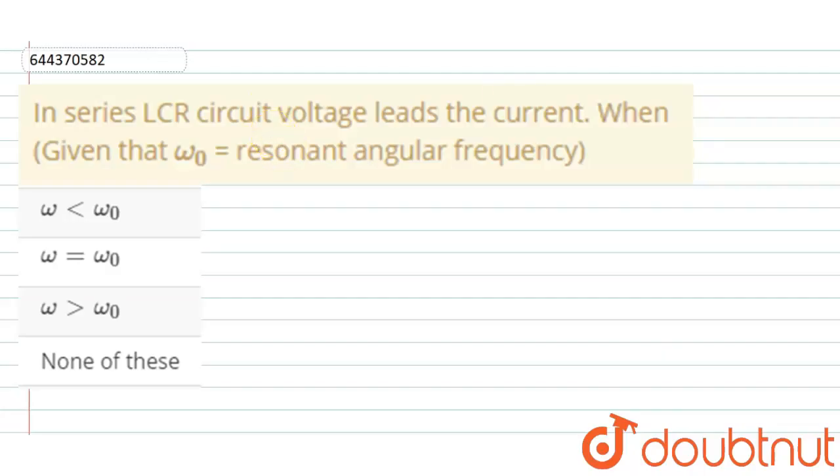Here's the question: In series LCR circuit, the voltage leads the current. When given that omega 0 is equal to the resonant angular frequency.